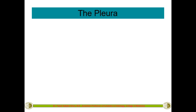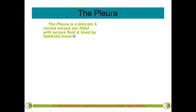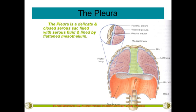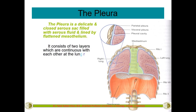Welcome back students. We'll talk about the pleura. The pleura is defined as a delicate serous sac filled with serous fluid and lined by flattened mesothelium. In this picture, if you see the lung, it is covered by a thin membranous sac — that is the serous sac — and it contains a small quantity of fluid, which is called the serous fluid, and it is lined by thin flattened mesothelium.